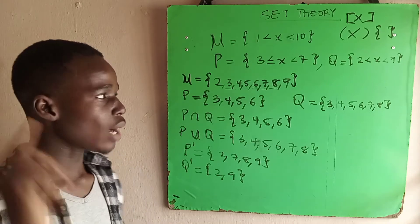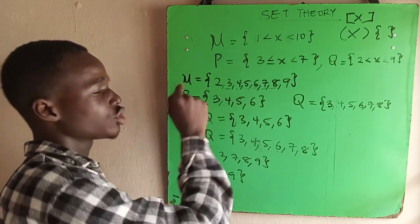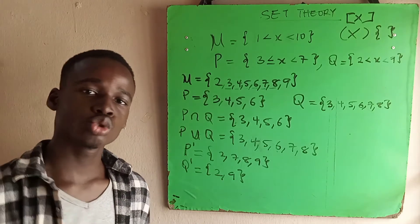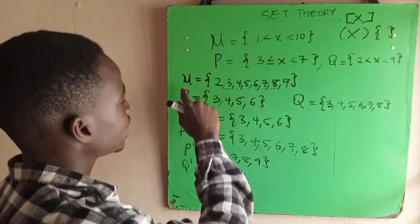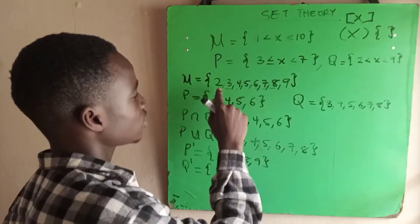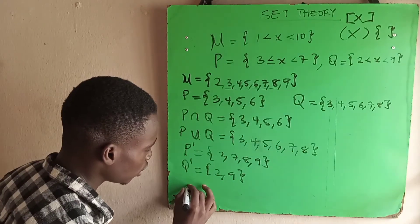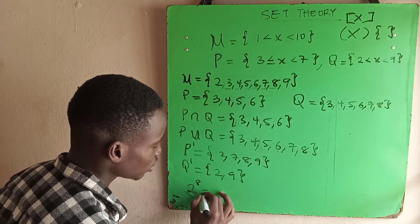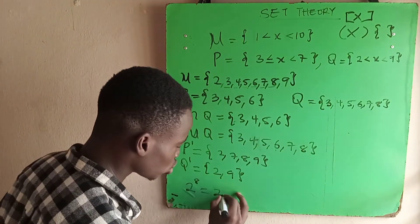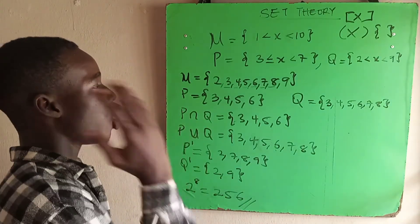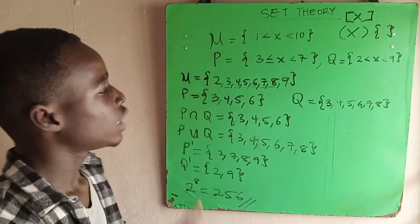The last but not the least is the power set of the universal set. Remember the power set is 2 raised to power of N. Let's count the universal set. The number of elements in the universal set is 1, 2, 3, 4, 5, 6, 7, 8. It means the power set will be 2 raised to power of 8, and 2 raised to power of 8 equals 256.